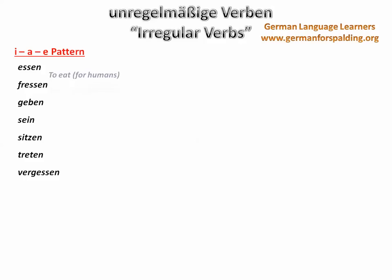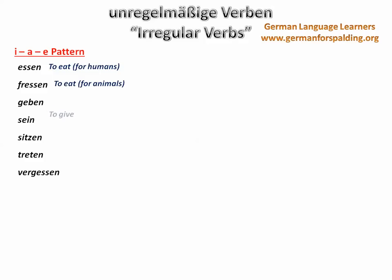Essen, which is to eat. Fressen, which is a German verb for to eat or to devour, used primarily with animals. Geben, to give. Sein, to be. Sitzen, to be sitting. Treten, to step or to kick. Und vergessen, to forget. These seven verbs all follow the E-A-E pattern, as you'll see in a minute.